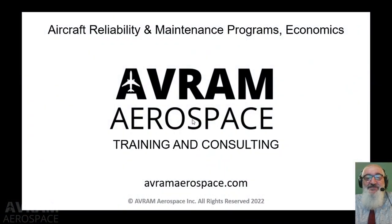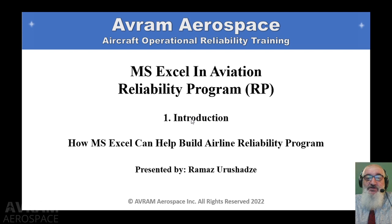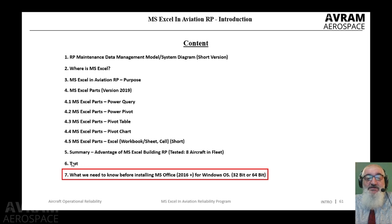Hello, this is Ram Mass from Avram Aerospace. In this video we are going to continue our discussion about how Microsoft Excel can help us to build the airline reliability program. As we remember, we had six chapters and three video parts, but I added Chapter 7, and as a result now we have four video parts. In the introduction, Chapter 7 is called: what we need to know before installing Microsoft Office / Microsoft Excel 2016 plus, and I'm talking here for Windows operating system.